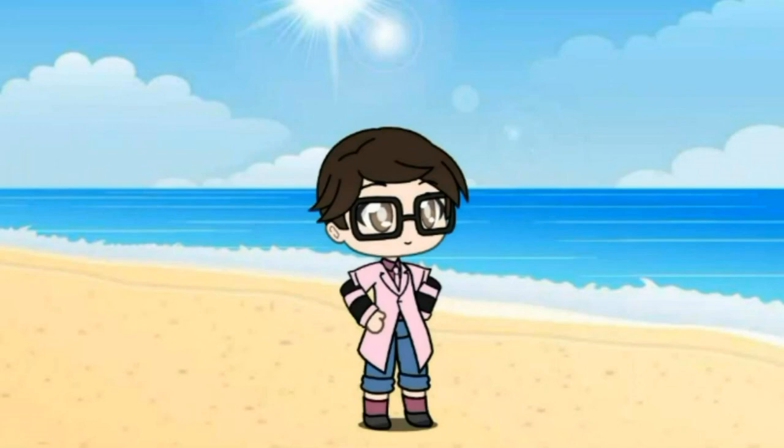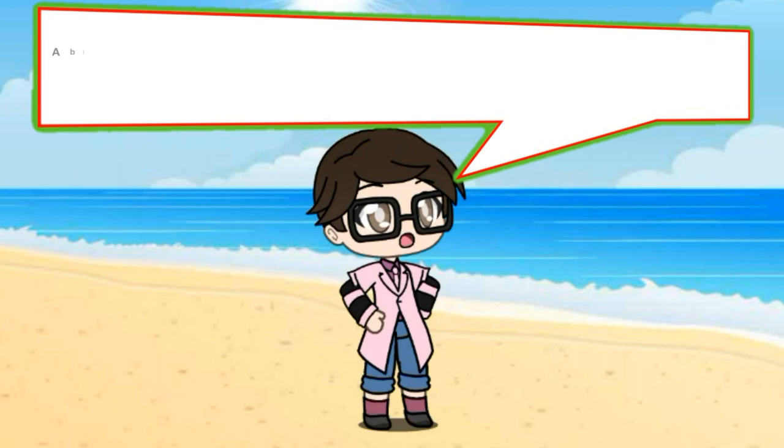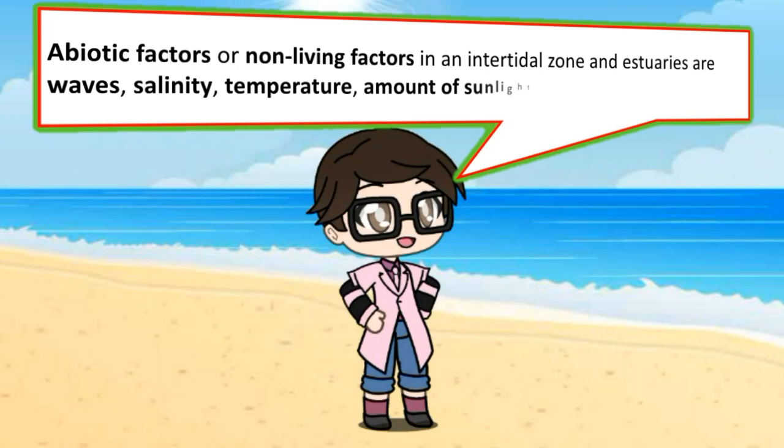What are the abiotic factors, or non-living factors, in an intertidal zone and estuary? Abiotic factors in an intertidal zone and estuary are waves, salinity, temperature, amount of sunlight, and type of soil.